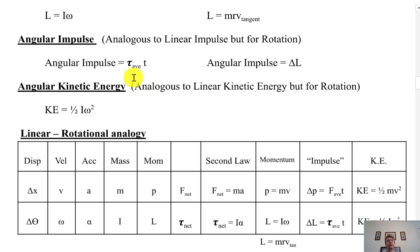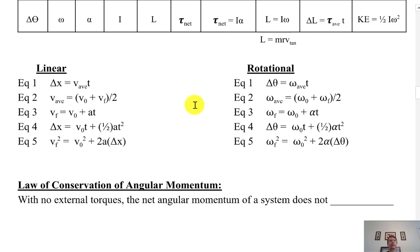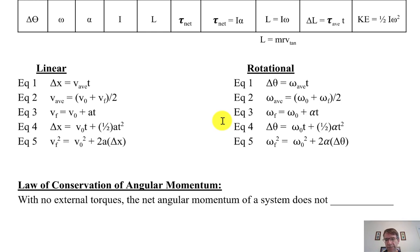Angular momentum also has an alternate equation: L = m r v. Rotational kinetic energy is (1/2) I omega², directly analogous to (1/2) m v². The five kinematics equations from units two and three carry over exactly to rotation — just swap the letters. The law of conservation of angular momentum mirrors conservation of linear momentum: with no external torques, the net angular momentum of a system does not change; it stays constant.